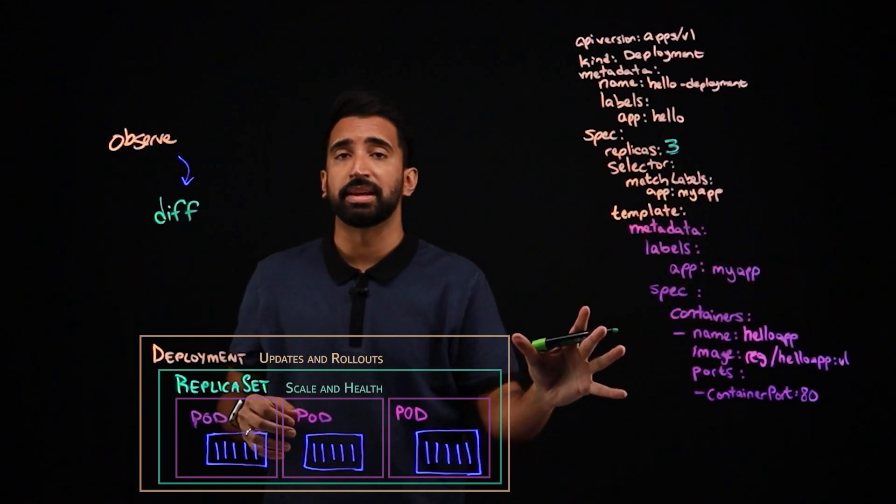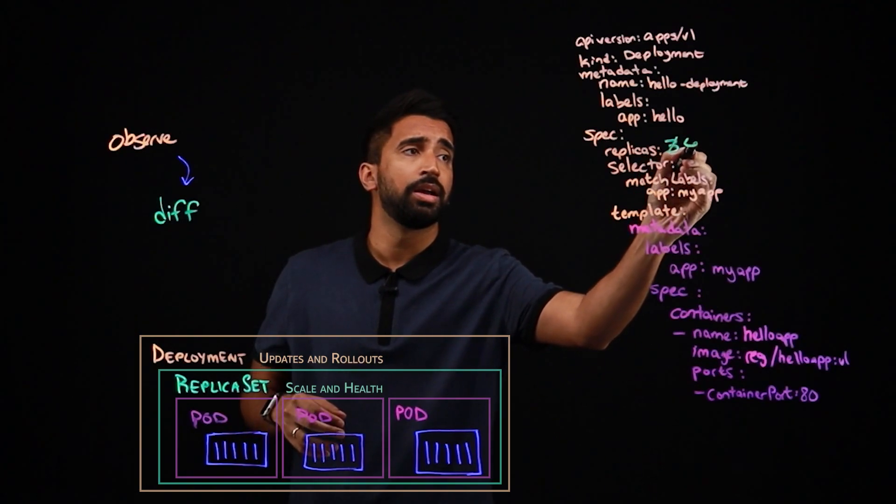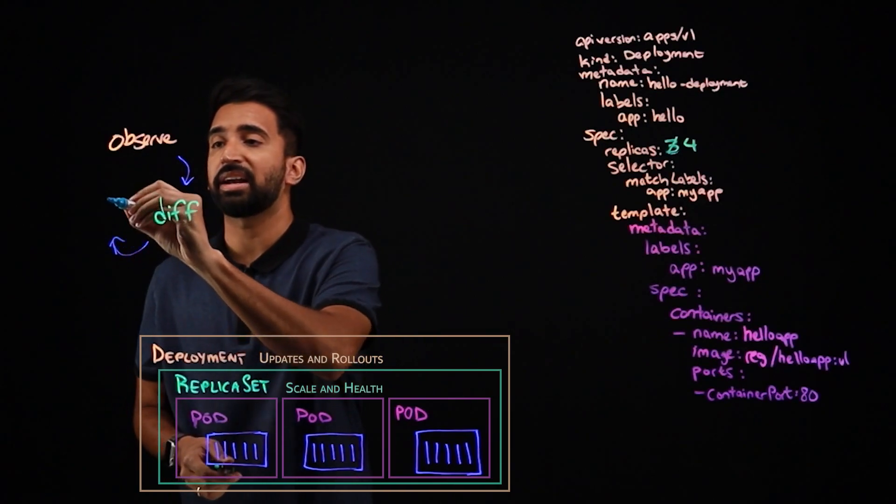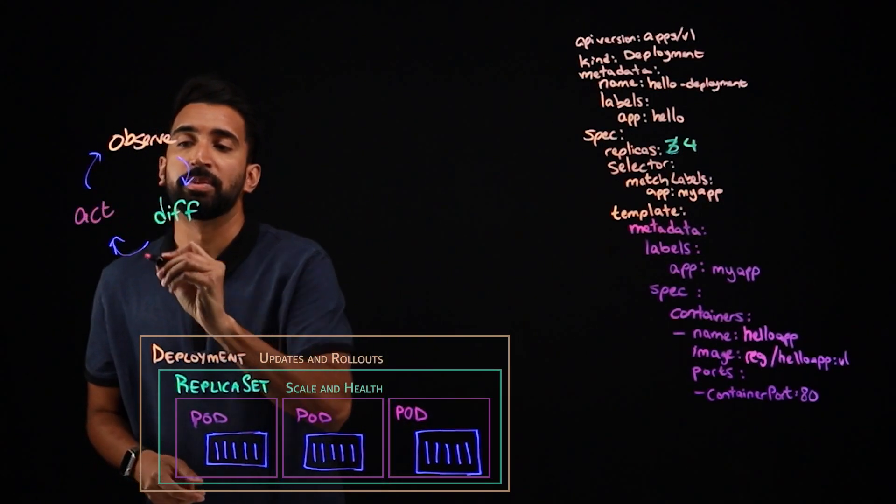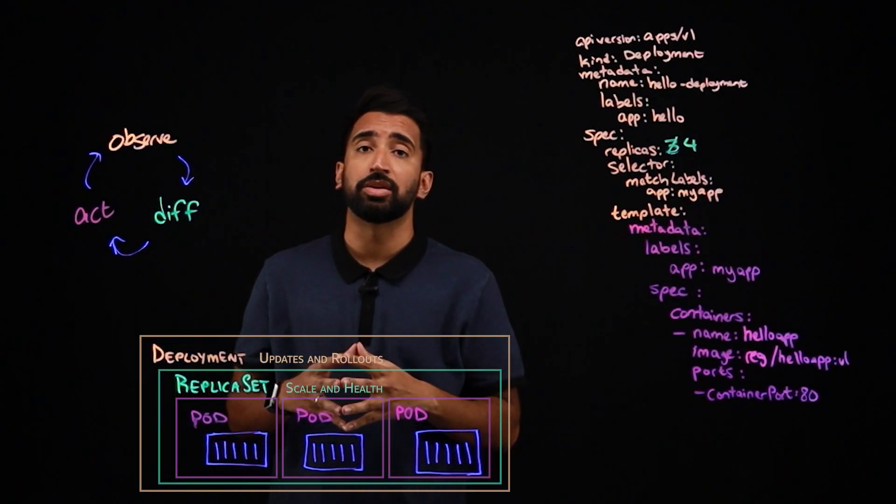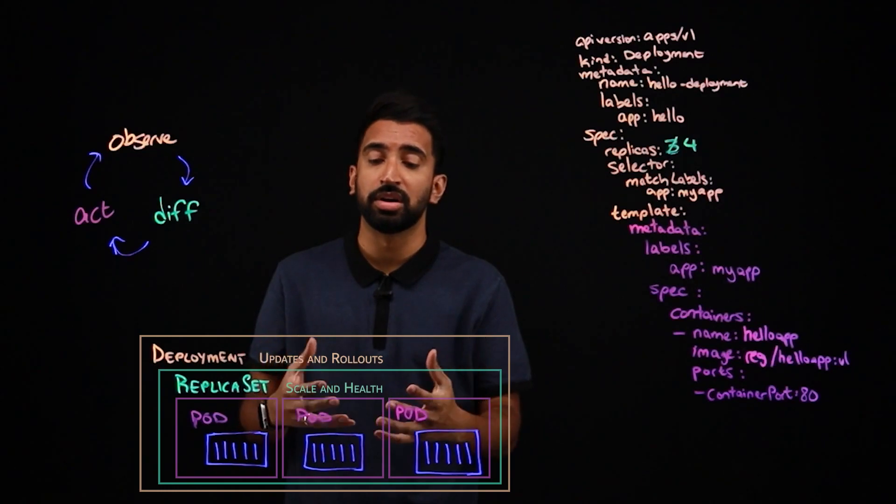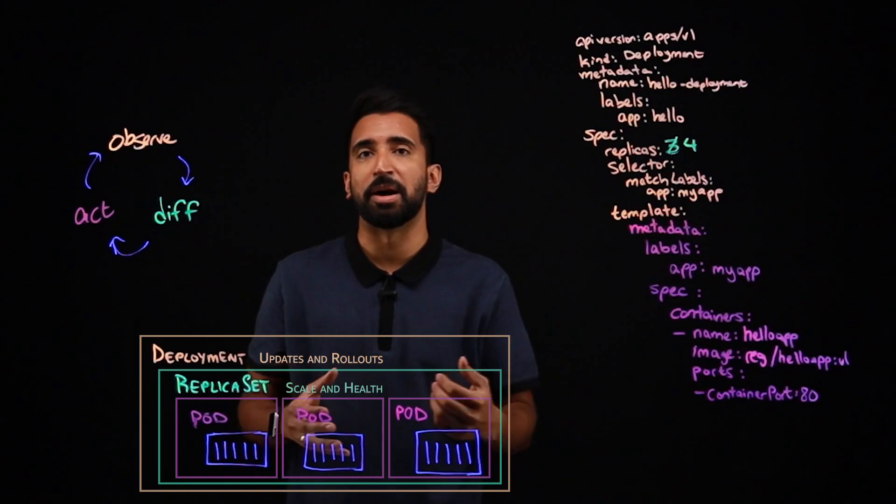Let's say we updated something here, bumped up the replicas from three to four. So it's going to identify that that changed. And the next thing it'll do is it's going to act on it. This essentially is the control loop. And it's how Kubernetes handles the lifecycle of these objects, and kind of the self healing nature of containers within Kubernetes. And so of course, here we would see another pod come up.